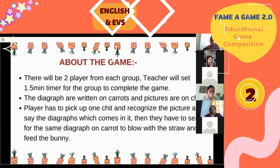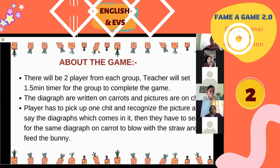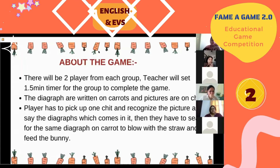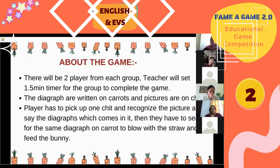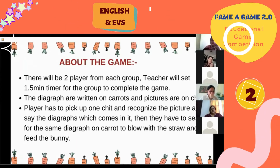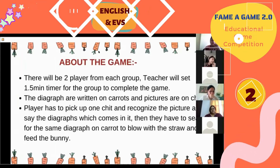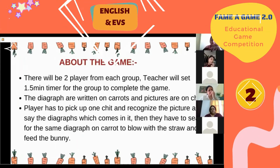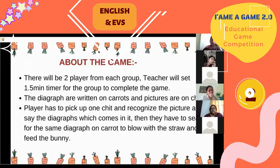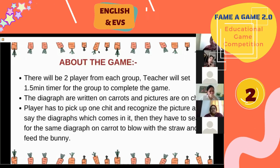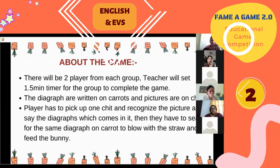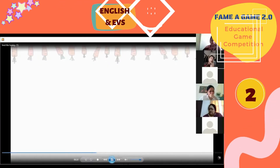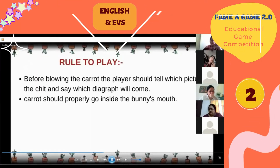But after that, there is a little twist that the child doesn't know — it's a sudden twist. If they get a chit in which two digraphs are there, that will be a bonus point for them. But the child should understand, yes, there are two digraphs. At the same time, he has to search both digraphs — like CH and CK — and keep both carrots on the start point and blow them both into the bunny's mouth. And as per that, we will count the points, and who has fed more carrots to the bunny, that team will be the winner.